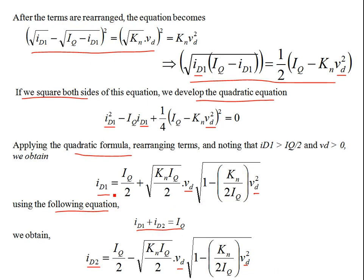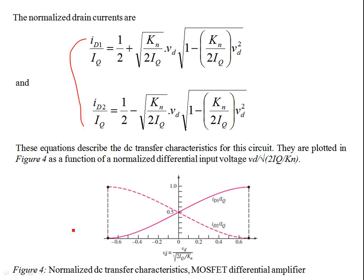Normalizing the drain currents with respect to IQ and the differential voltage with respect to √(2IQ/KN), and plotting these normalized expressions as in Figure 4, reveals key behaviors. When the normalized differential voltage VD' = 0, both ID1/IQ and ID2/IQ equal 0.5 — both transistors carry equal half the Q-point current. This matches the symmetry condition.